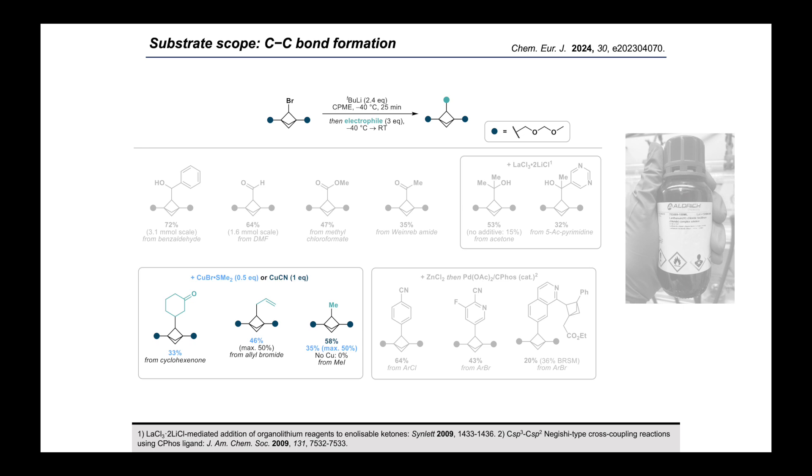By transmetallation to copper, we also achieved alkylation of the BCP lithium, through both conjugate addition and SN2-type pathways. To highlight the high reactivity of the BCP lithium, we found that if you attempt to quench with methyl iodide in the absence of copper, you see none of the expected methylation product, but instead a second lithium-halogen exchange to give the BCP iodide and presumably methyl lithium.